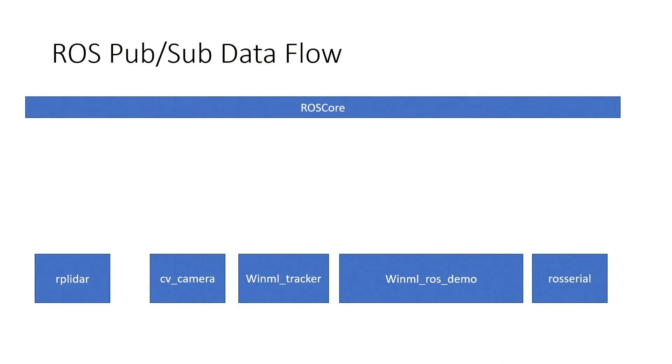During startup, nodes typically connect to other nodes or to hardware. For this demo, we have quite a number of nodes, but five important ones: the LiDAR — which is the thing that spins on top — a camera, WinML which uses the WinML inference engine, the demo node which serves as the coordinator for all of the nodes, and finally ROS serial, which is how we actually make the motors move.